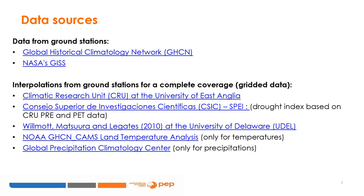Weather data comes from different sources. Precipitation and temperature data are collected by ground stations and by satellites. The main problem with ground station data for developing countries is that data quality depends on the availability of a sufficient number of stations to cover most of the country's area. In many developing countries, the weather monitoring budget is quite low, the number of ground stations is limited, and entry and exit of weather stations from the database is quite common.